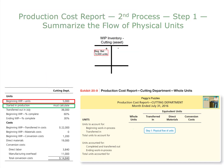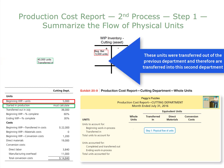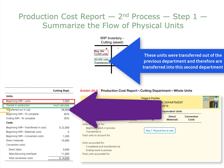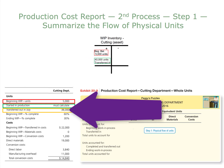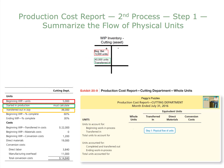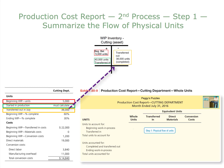In our T-account, we place the transferred-in units here. Throughout the month, 38,000 puzzles were completed and transferred out to finished goods inventory. In our T-account, we place the completed and transferred units here. Now we can calculate the ending balance.